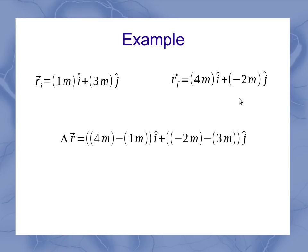When I do my vector subtraction, the x component becomes 4 meters minus 1 meter, and my j hat becomes negative 2 meters minus 3 meters, which gives me a total of 3 meters in the i hat direction and negative 5 meters in the j hat direction.